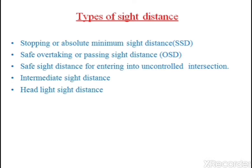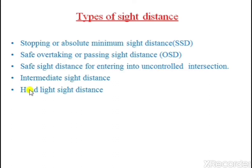There are five types of sight distances. First is SSD, that is stopping or absolute minimum sight distance. Second is safe overtaking or passing sight distance, also called OSD. Third is safe sight distance for entering an uncontrolled intersection. Fourth is intermediate sight distance, and fifth is headlight sight distance.